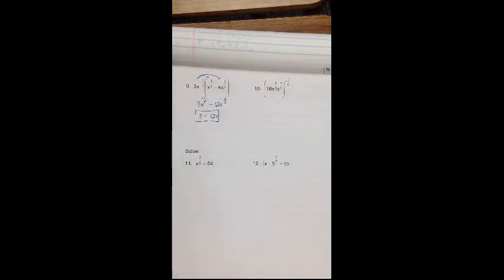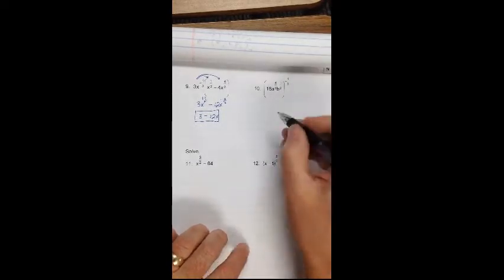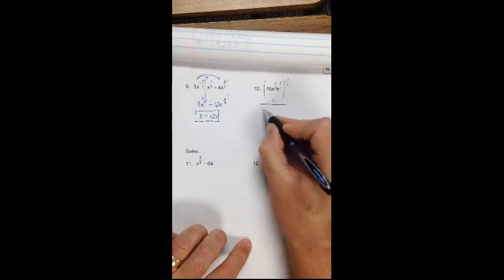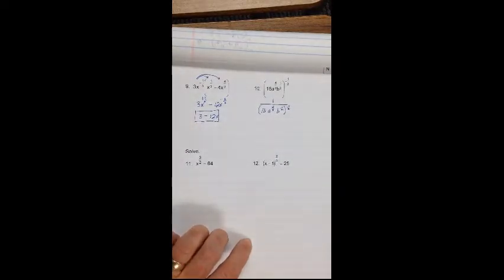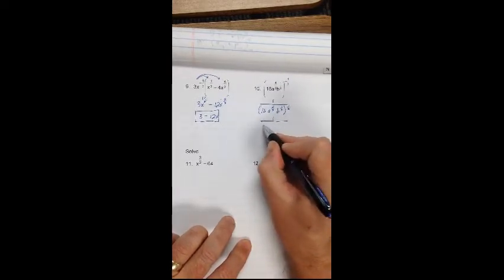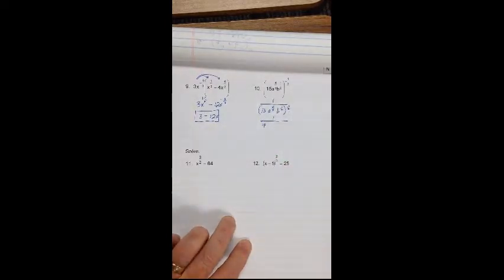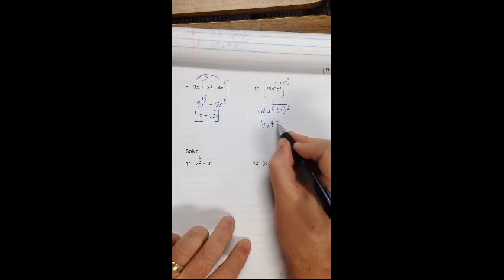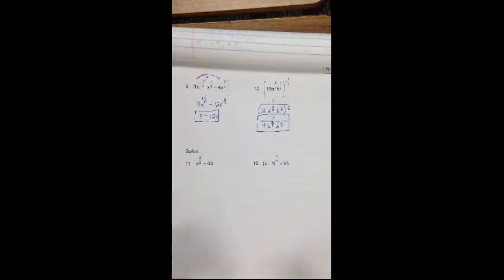Number 10 has a negative 1 half power outside, which means I'll eventually take the reciprocal. I write this as 1 over 16 a to the 4 thirds, b to the 1 half, all to the positive 1 half power. The 1 half power on 16 means taking the square root of 16, which is 4. So I've got 1 over 4, then a to the 4 thirds times 1 half equals a to the 2 thirds, and b to the 1 half times 1 half equals b to the 1 fourth. Final result: 1 over 4 a to the 2 thirds b to the 1 fourth.